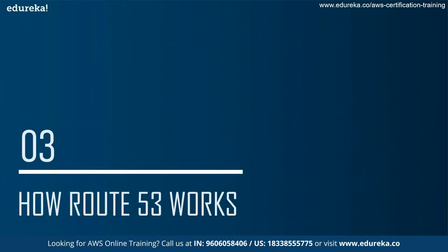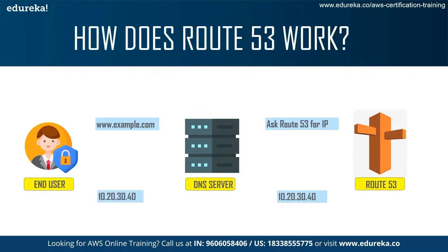Now let's look at how Route 53 works. If you're an end user and you type in a website like youtube.com or facebook.com, that domain name is sent to the DNS server. The DNS server asks Route 53 for the IP address. Route 53 sends back a publicly accessible IP address to the DNS server, which then sends it to the end user, who can now use it to access the desired website.